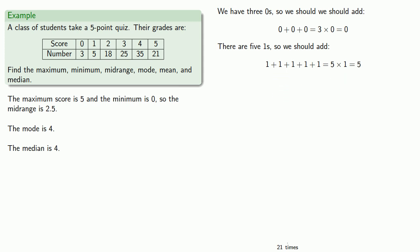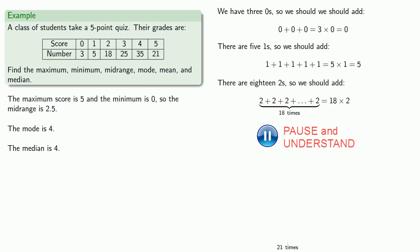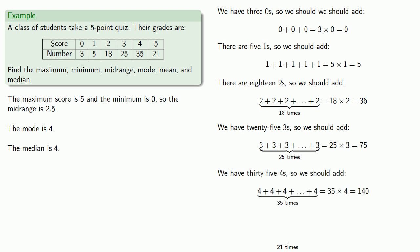Now, the real time saver comes when we try to add together those eighteen twos. We don't actually have to add them, we can say that's the same as eighteen times two, or thirty-six. The twenty-five threes added together give us twenty-five times three, or seventy-five. If I add together thirty-five fours, I get one hundred and forty. And if I add together twenty-one fives, I get one hundred and five.